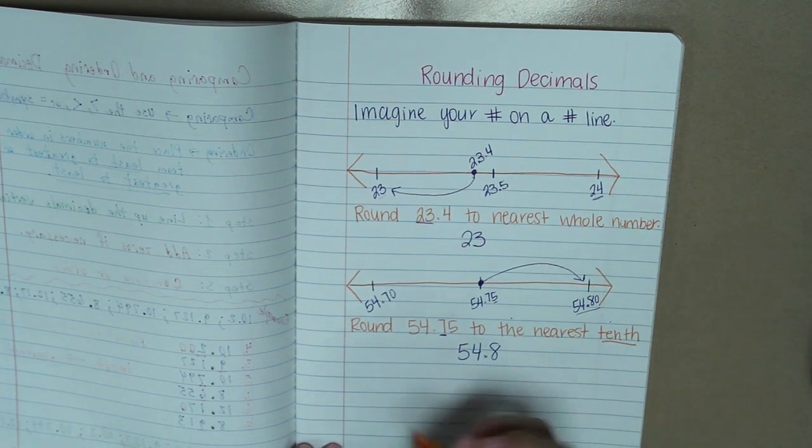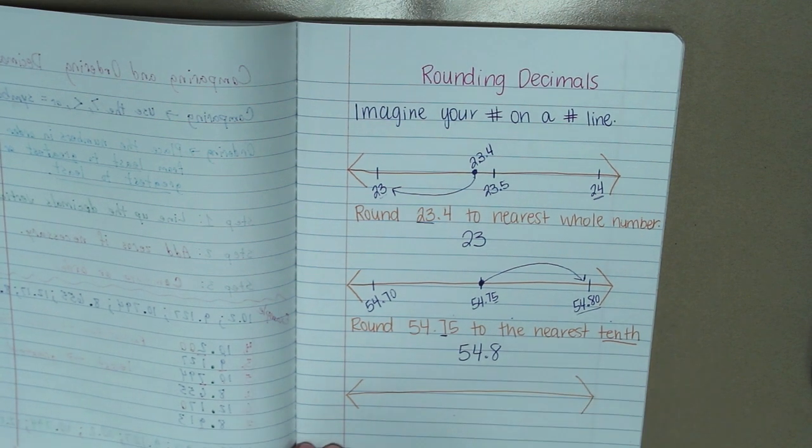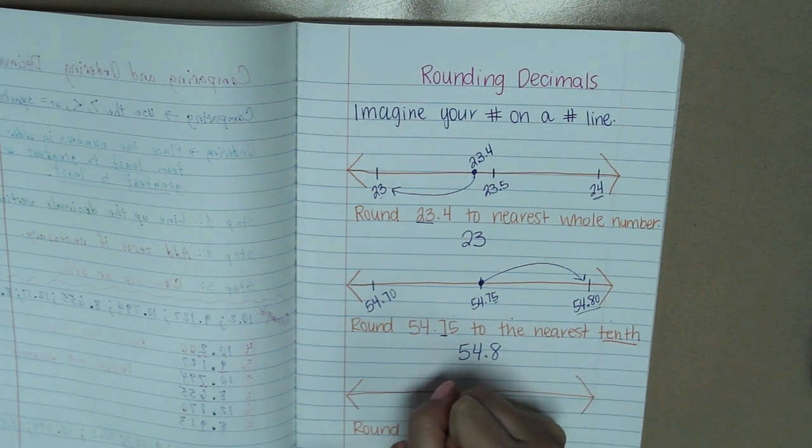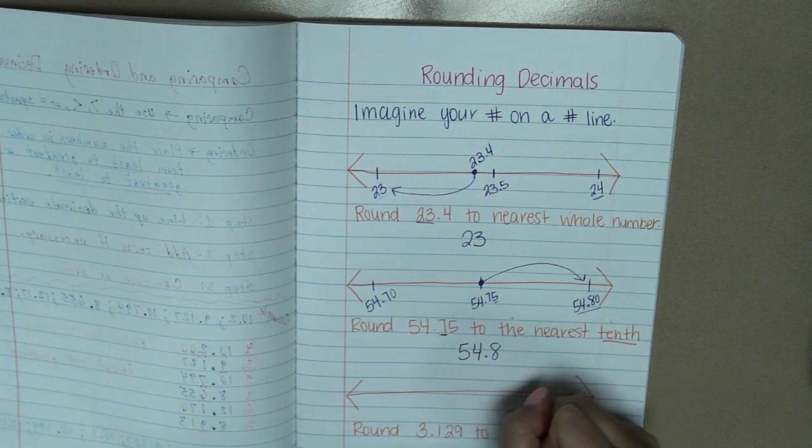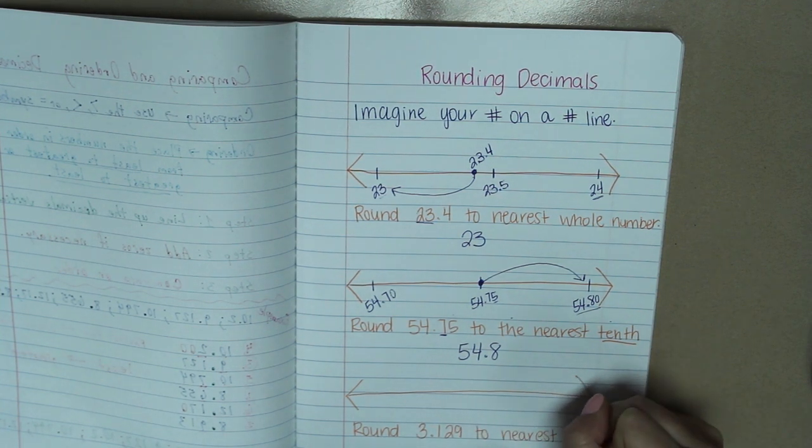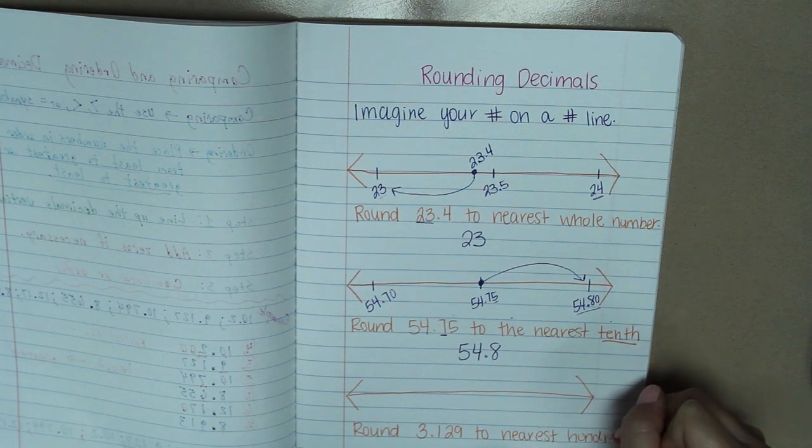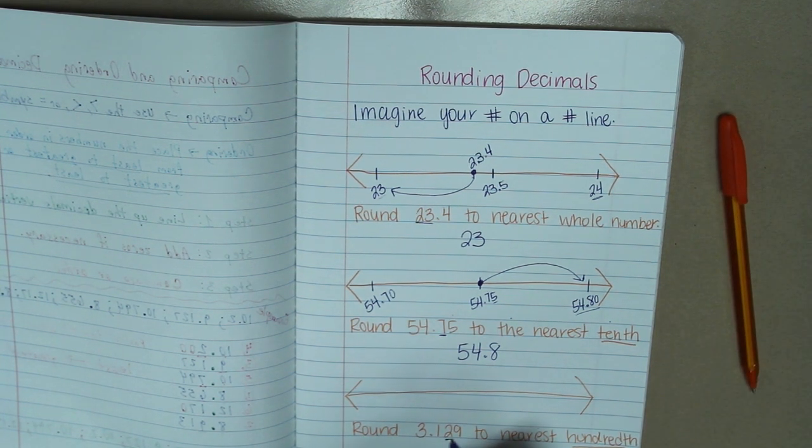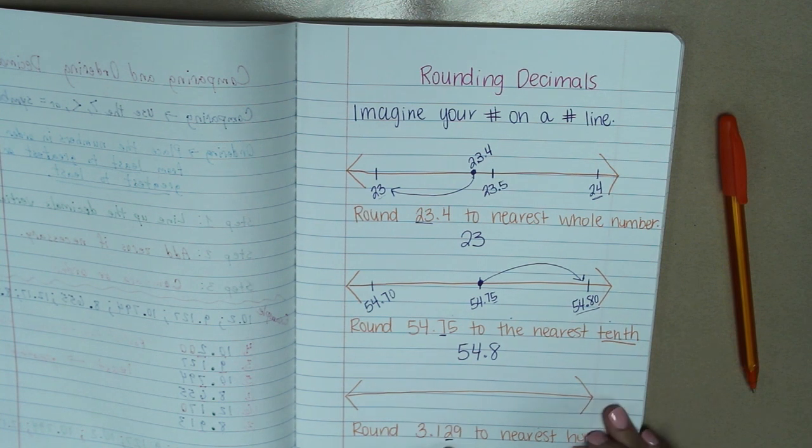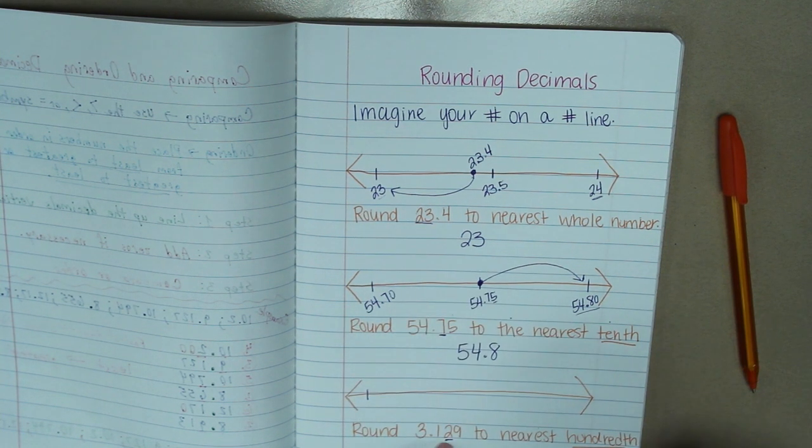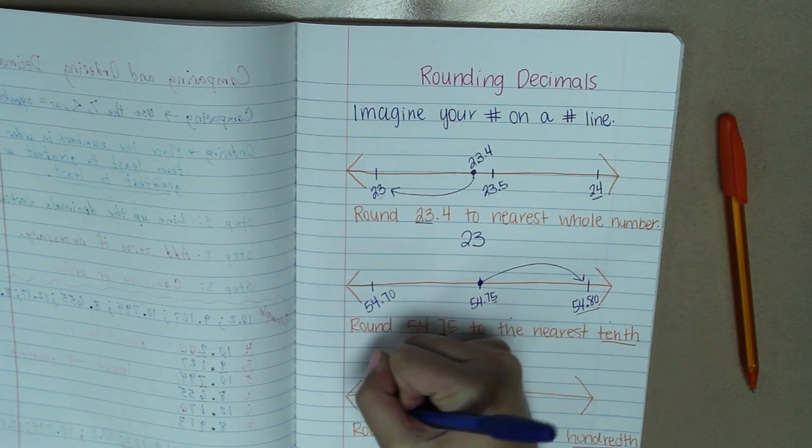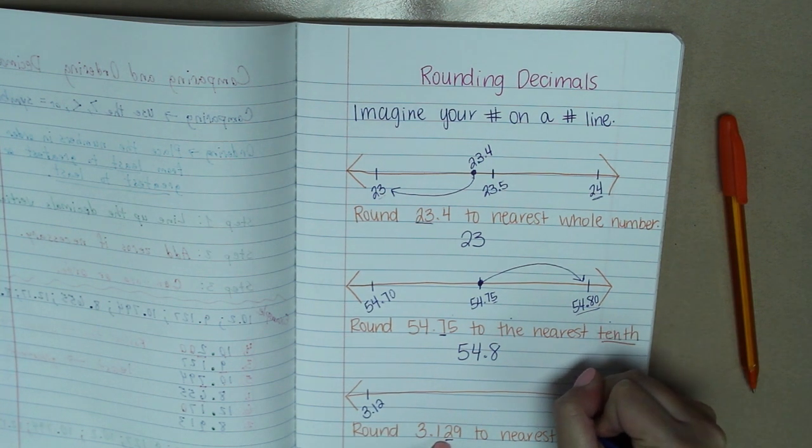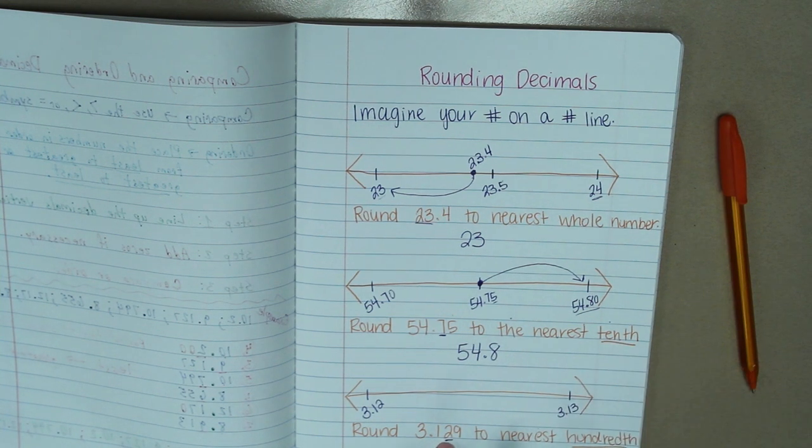One last example. We are going to round 3 and 129 thousandths to the nearest hundredth. Okay. Our hundredths place is located right here, the 2. So on our number line, we are going to make sure we include our value on the left, which is 3 and 12 hundredths, if we were to round down. And then 3 and 13 hundredths, if we were to round up.